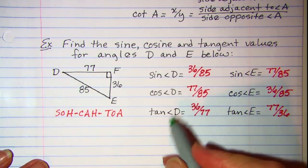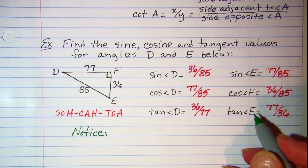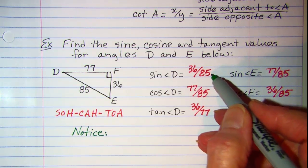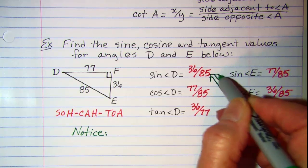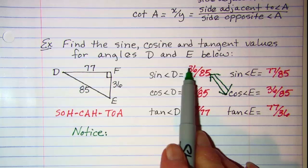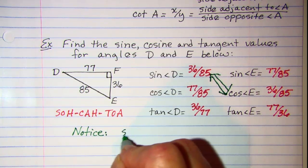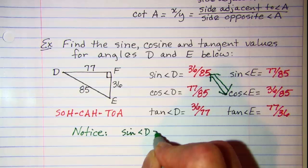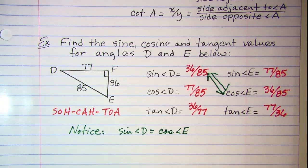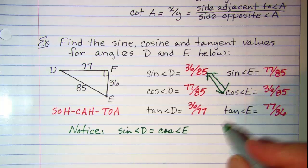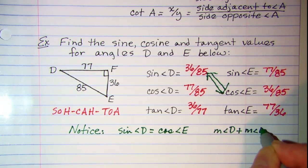Now notice on these, my sine of angle D and my cosine of angle E are equal: 36 over 85 and 36 over 85. So my sine of angle D is equal to the cosine of angle E.